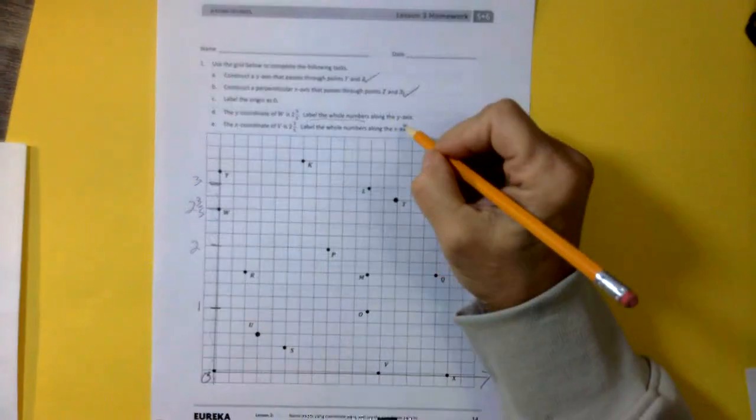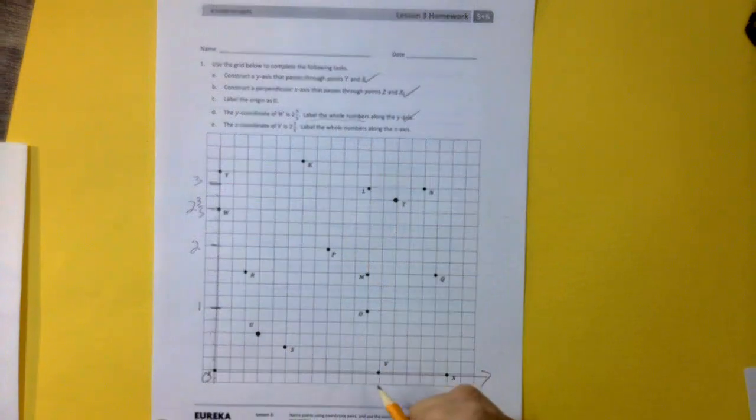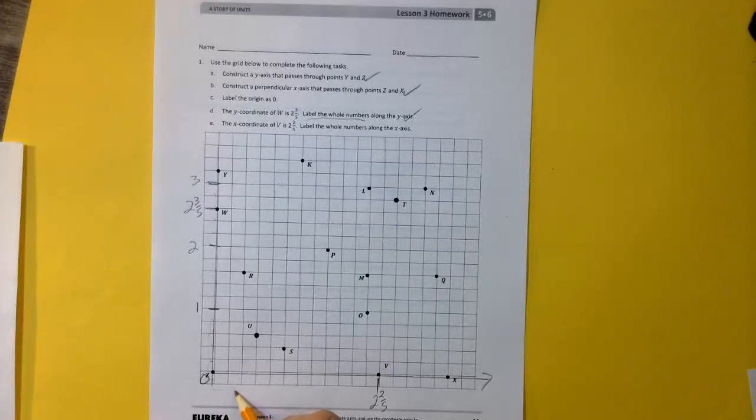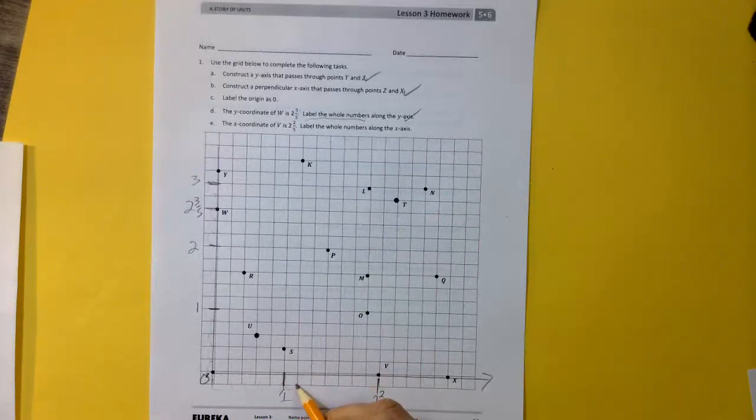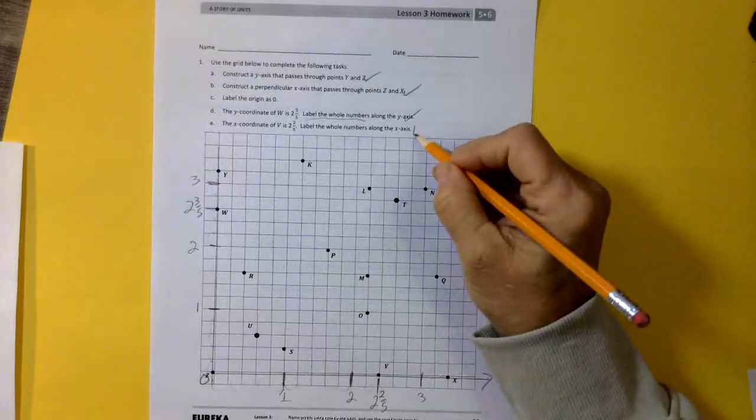Down here it says the x-coordinate of v is 2 and 2 fifths. So this is 2 and 2 fifths. Again, we're going to count by fifths. 1, 2, 3, 4, 5 to label those whole numbers. 1, 2, 3, 4, 5. 1, 2, 3, 4, 5. Okay, great. So we've done that part.